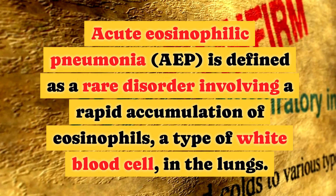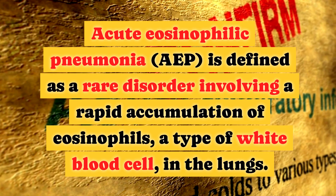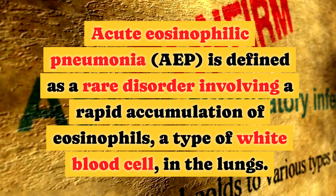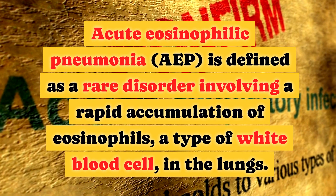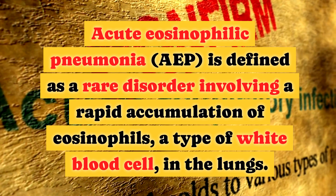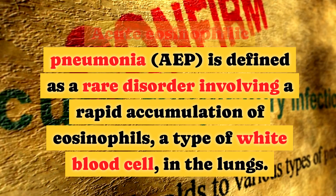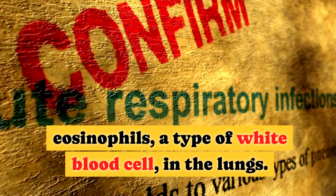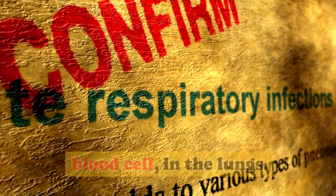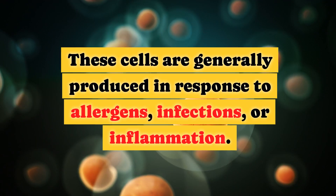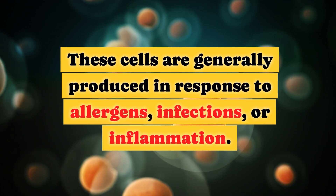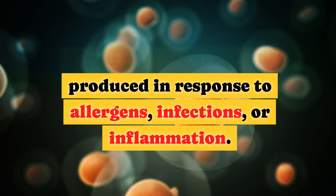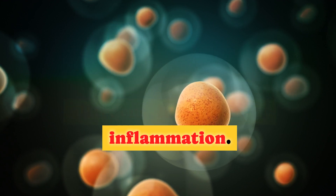Acute eosinophilic pneumonia (AEP) is defined as a rare disorder involving a rapid accumulation of eosinophils, a type of white blood cell, in the lungs. These cells are generally produced in response to allergens, infections, or inflammation.